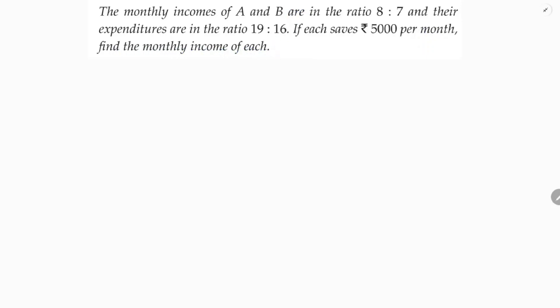So here see they give the ratio of the incomes of two persons like A and B and their expenditure. So I'll consider, let the incomes of A and B be 8x and 7x respectively.